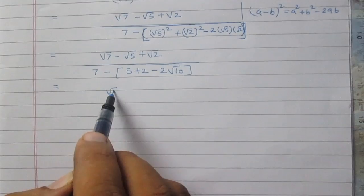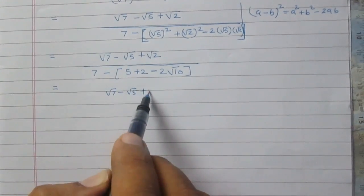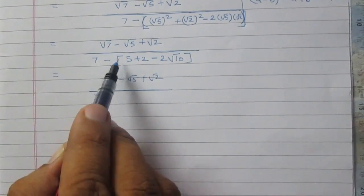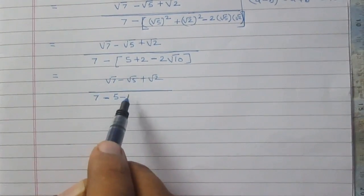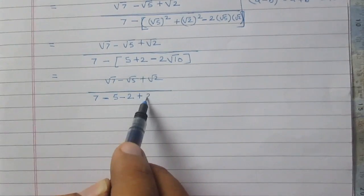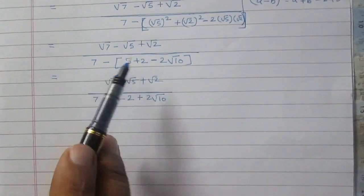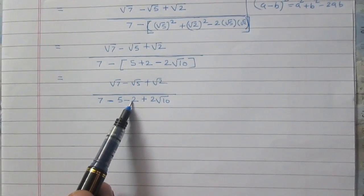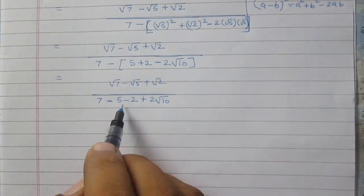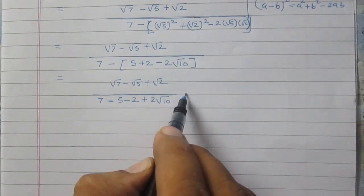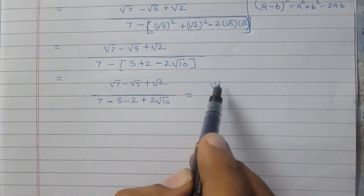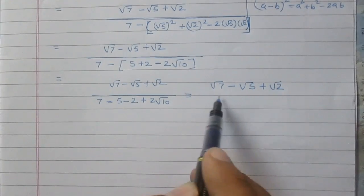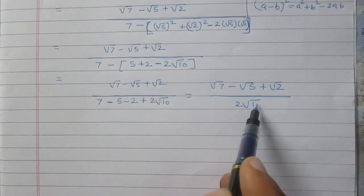The numerator remains as square root 7 minus square root 5 plus square root 2. The denominator becomes 7 minus (5 + 2 - 2√10), which is 7 minus 5 minus 2 plus 2√10. Since 7 minus 5 is 2, and 2 minus 2 is 0, the denominator simplifies to 2 times square root 10.